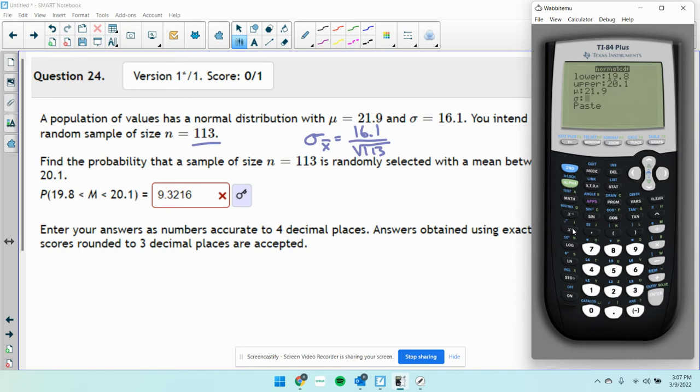Whoops, let me do that. 16.1 divided by the square root of 113. Close parentheses like that. So we get a probability of 0.0345.